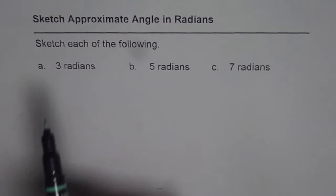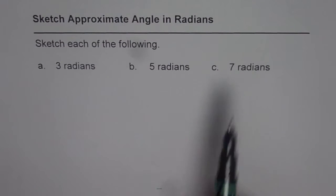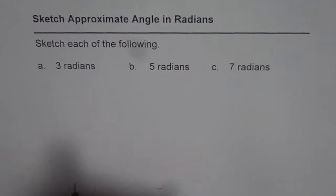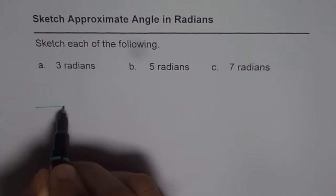Question here is sketch each of the following: 3 radians, 5 radians and 7 radians. Now when we are talking about radians we should consider π. π is half circle, 2π is full circle, that will help us to sketch an angle given to us.